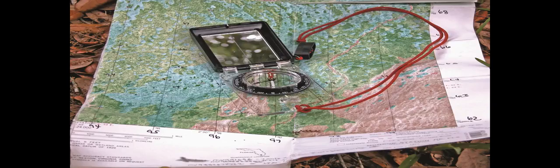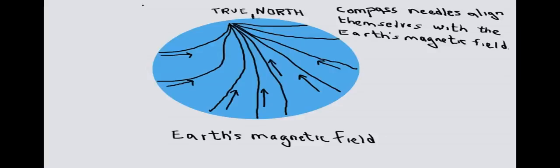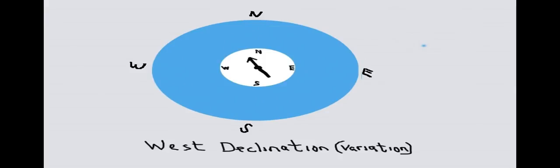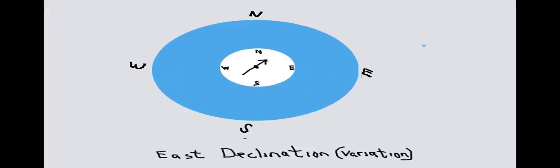To start with, let's see how a compass works. A compass needle aligns itself with the Earth's magnetic field, causing one end of the needle to point in a northerly direction. But normally, that end of the needle doesn't point to exactly true north — it points some bit to the west of north, or some bit to the east of north. When the compass needle points to the west of north, that's called west declination, or west variation. And when the compass needle points to the east of north, that's called east declination, or east variation.